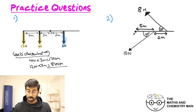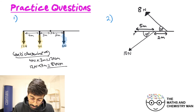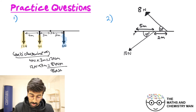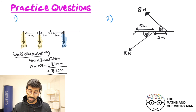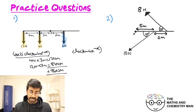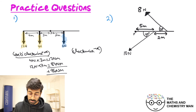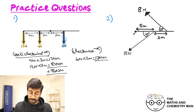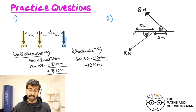Summing the two anti-clockwise moments: 84 plus 12 equals 96 Newton meters, positive. For the clockwise direction, there's only one force — six Newtons. Six Newtons multiplied by two meters gives 12 Newton meters, which we make negative.